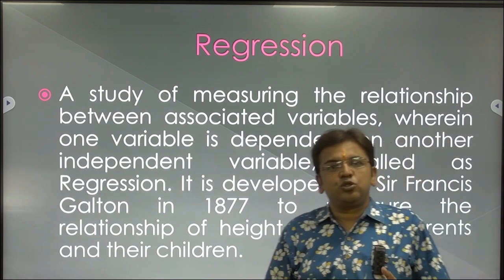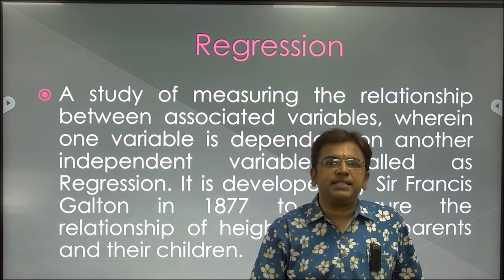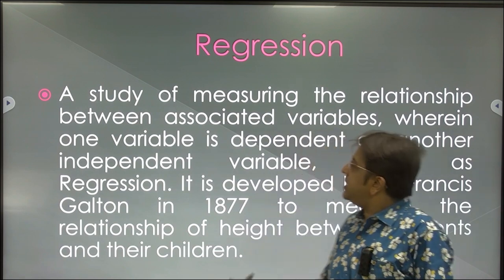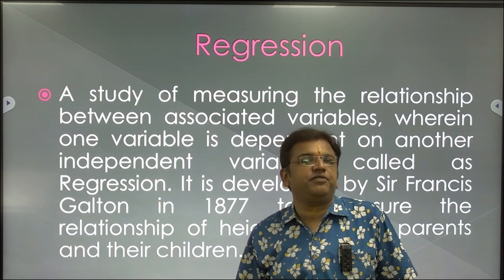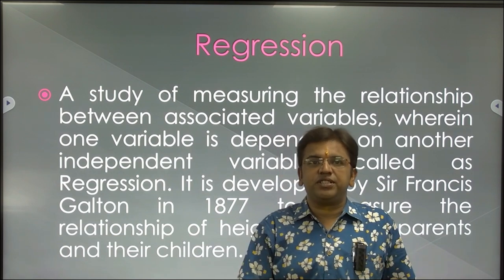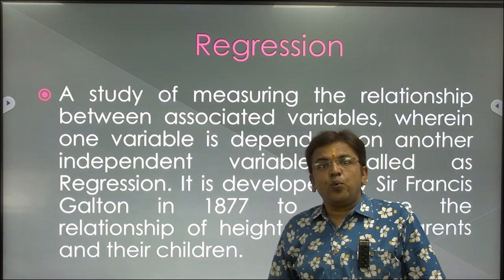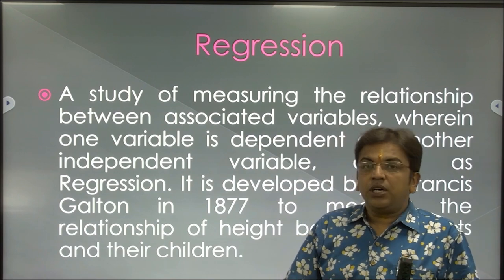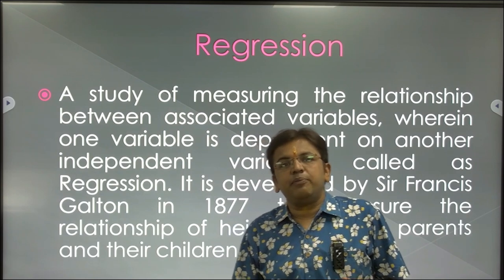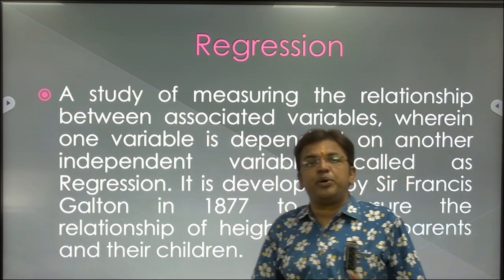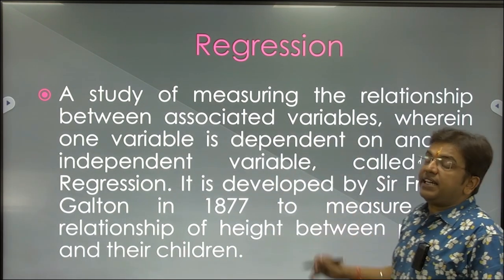Regression means to regress, to step back — meaning here by the help of past data we are going to predict the future. The association between different variables, and the past and the future, is all being associated. There are two variables taken into consideration: the dependent and the independent variables. By the help of dependent variables we are going to predict the value of the independent variable. It was given by Francis Galton in 1877.